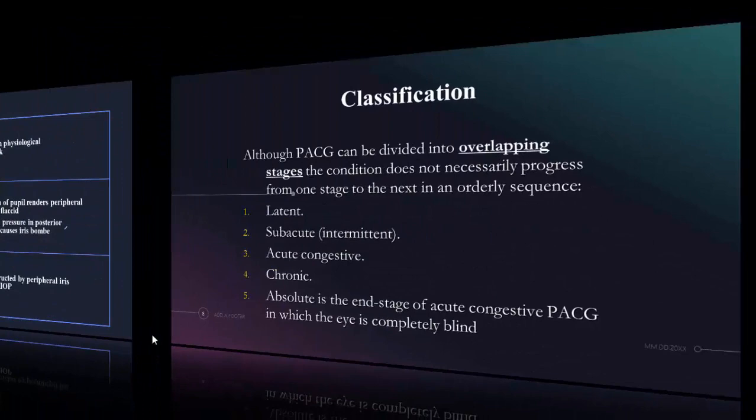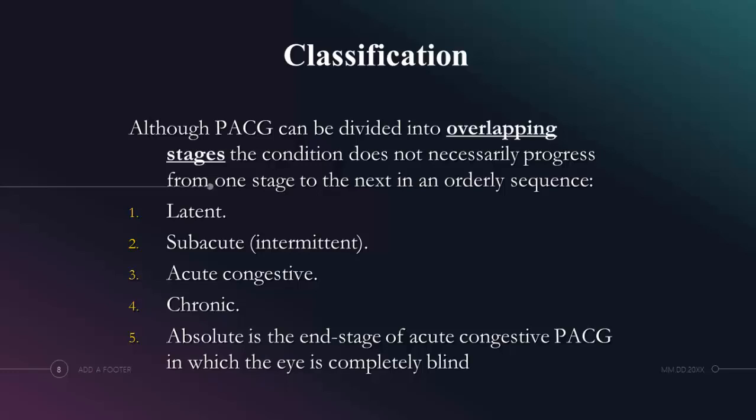Classification of primary angle closure glaucoma with a pupillary block mechanism can be divided into different stages, though there is some degree of overlapping between them. The stages include: latent type, sub-acute or intermittent type, acute congestive type, chronic type, and lastly the absolute stage, which occurs when there is total optic atrophy and loss of vision.